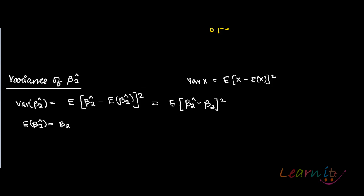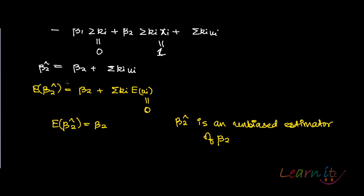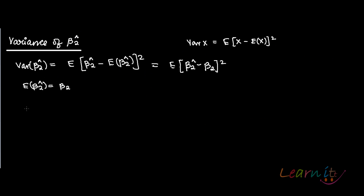If you go back to the earlier recording and see this step, which is beta 2 hat equals beta 2 plus summation ki ui. I'll rewrite this here: beta 2 hat is equal to beta 2 plus summation ki ui.